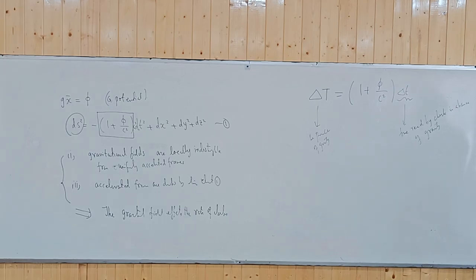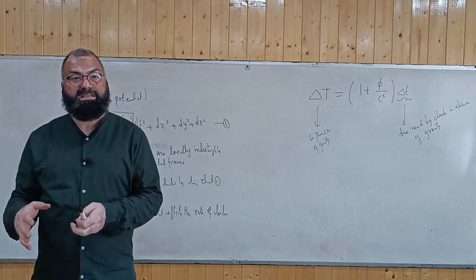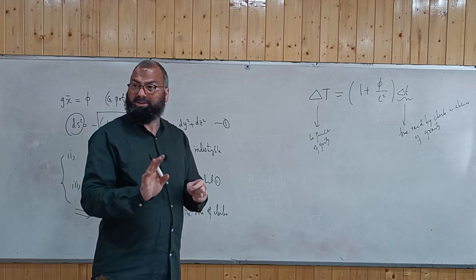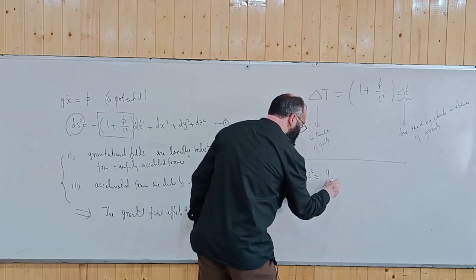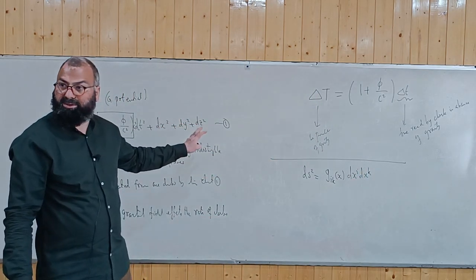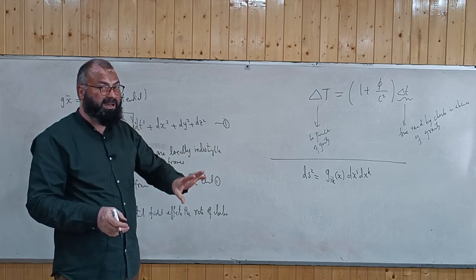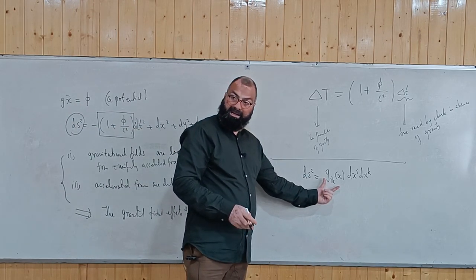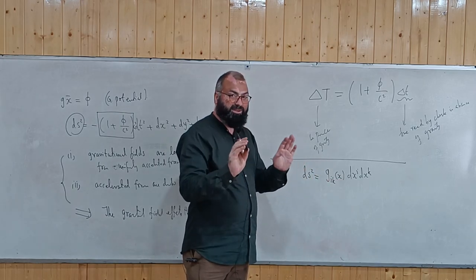For a clock at rest in the gravitational field, the line element reduces to ds² = g_00(x) c² (dx^0)², since the spatial components dx^1 = dx^2 = dx^3 = 0. This means the g_00 component modifies the time and gives the rate at which clocks tick. In the gravitational field, g_00 should not be a simple constant number — it must be a function dependent on the gravitational potential at that point, because the potential at different points in a gravitational field varies.